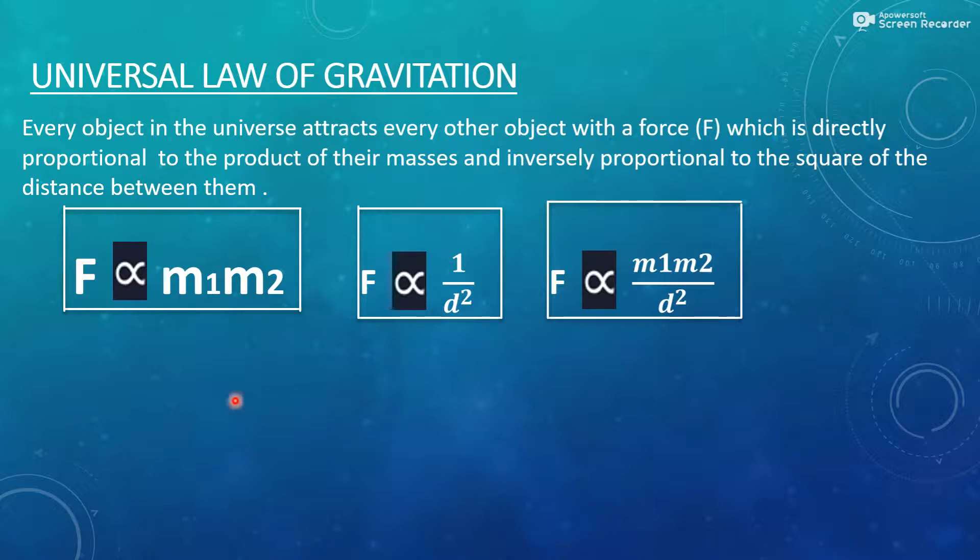So we will get first equation that is F is directly proportional to M1 and M2. And from the second condition, we will get F is inversely proportional to 1 by D square. Now, after combining equations first and second, we will get the third equation.